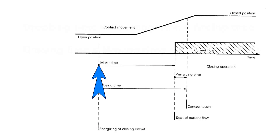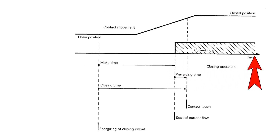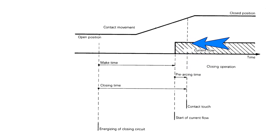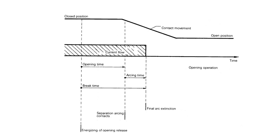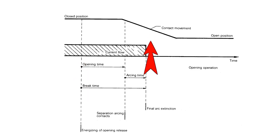Why is this portion called making time? Because during this period, although the contacts have not physically touched, current starts flowing through the breaker due to the arc. Hence, it is called making time — the circuit breaker makes the circuit by allowing current flow even before full mechanical closure. Similarly, breaking time refers to the time taken to completely interrupt current after the opening release is energized, even though the breaker has not yet physically completed its opening operation.